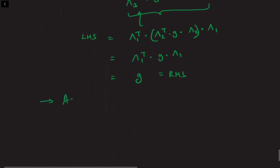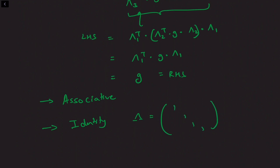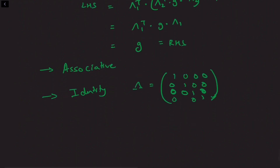Associativity is satisfied because matrix products are associative. The identity element clearly exists because we can take the identity matrix for lambda — it is the identity of matrix multiplication, and it belongs to this set, because lambda transpose dot g dot lambda, when lambda is the identity matrix, is just g.